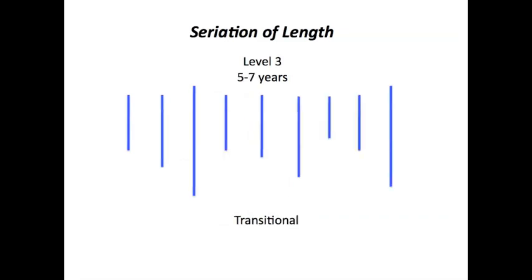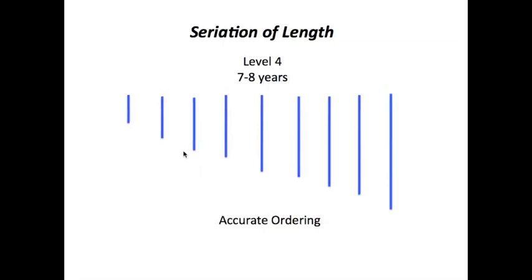As they get a little older, in the years five to seven, they're able to do transitional thinking. Some of you may be familiar with algebraic themes — there's the reflexive property that A equals A and the transitive property. The transitive property says if A equals B and B equals C, then A equals C. A child in this age would be able to say this one is shorter than that one, that one's shorter than that one, so they can put three of them together. Then in the last stage, they move to accurate ordering of all of the sticks without having to do just one or two at a time.